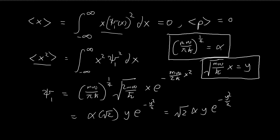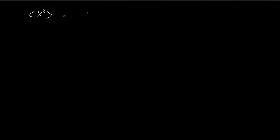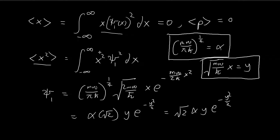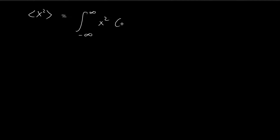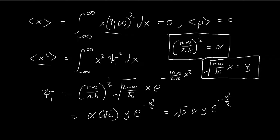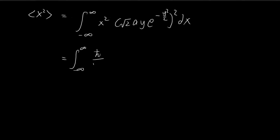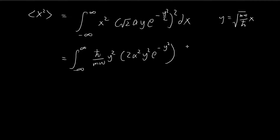So now we can apply it to our integral for the expected value of x squared. We have x squared times ξ₁ squared, which gives us y e to the power of negative y squared over 2, all squared, times dx. We need to change everything in terms of y. So x squared equals ℏ-bar divided by mω times y squared. Squaring the ξ₁ terms we get 2α² y² e to the power of negative y squared. And for dx, doing the substitution, dx becomes the square root of ℏ-bar divided by mω dy.